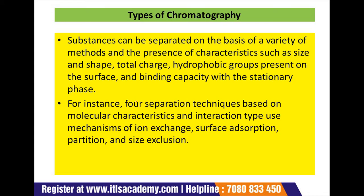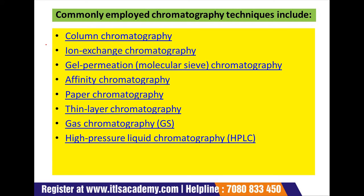The different types of chromatography include: column chromatography, ion exchange chromatography, gel permeation (also called molecular sieve) chromatography, affinity chromatography, paper chromatography, thin layer chromatography, gas chromatography, and high-pressure liquid chromatography. These are the basic and important types used generally in laboratories. Other types also exist and will be discussed in other lectures. In this lecture, we focus only on gas chromatography.